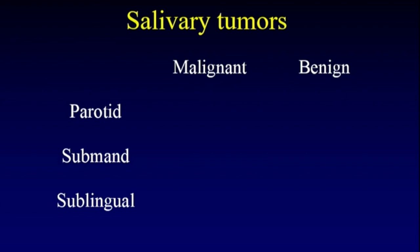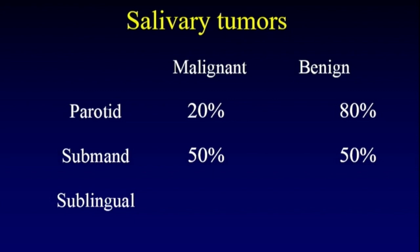This chart outlines the frequency of malignant and benign tumors in each of these glands. In the parotid gland, 80% of tumors are benign. Moving to the submandibular gland, it's 50-50 — only about half are benign. Once we get to the sublingual and minor salivary glands, that ratio has reversed: 80% are malignant and only 20% are benign.